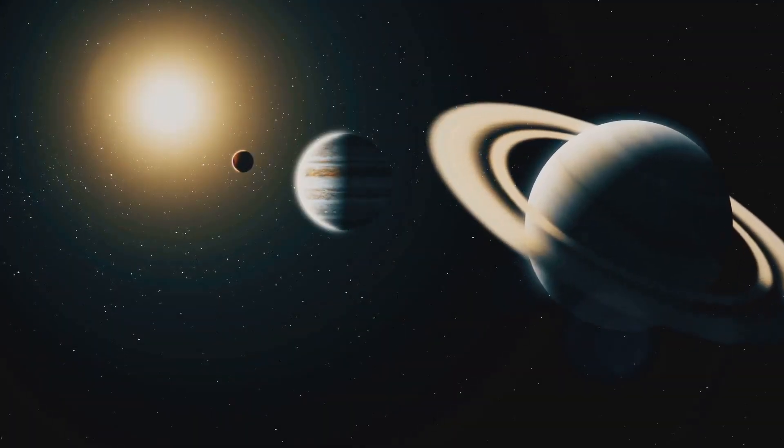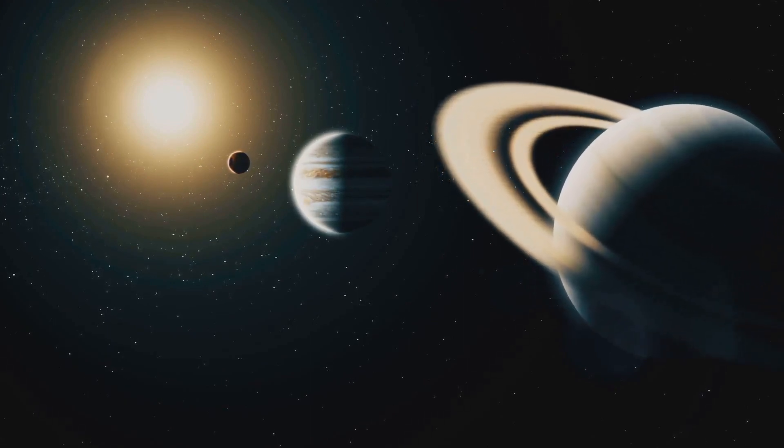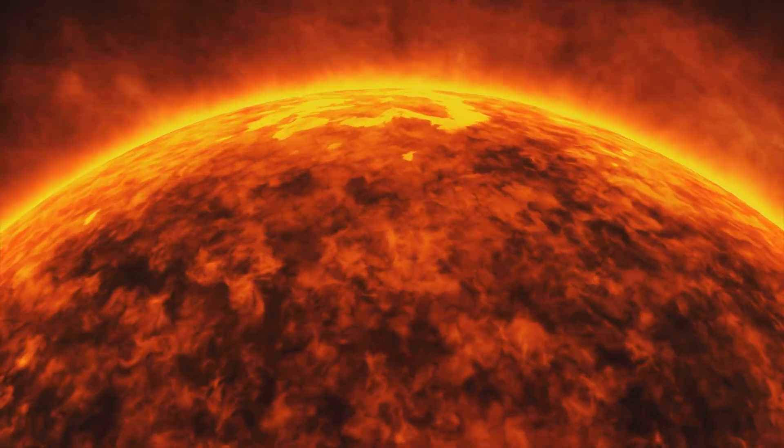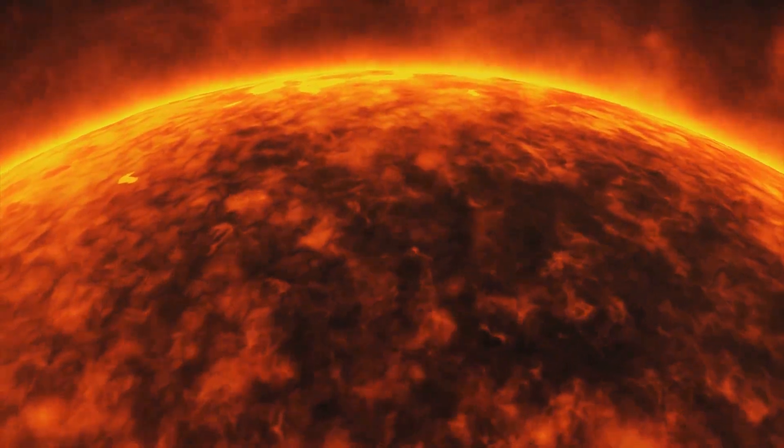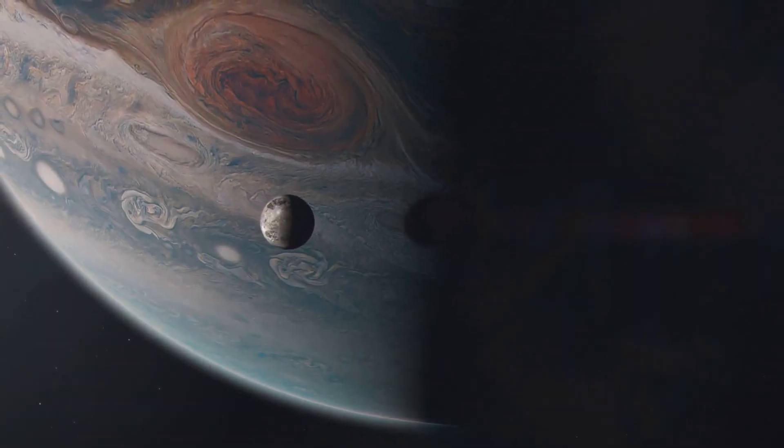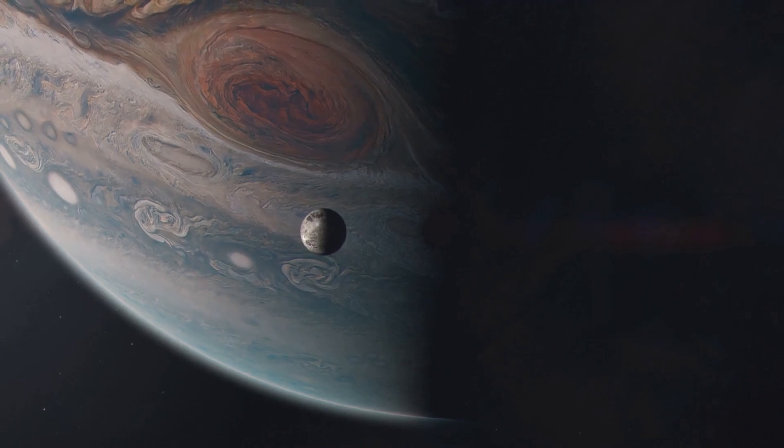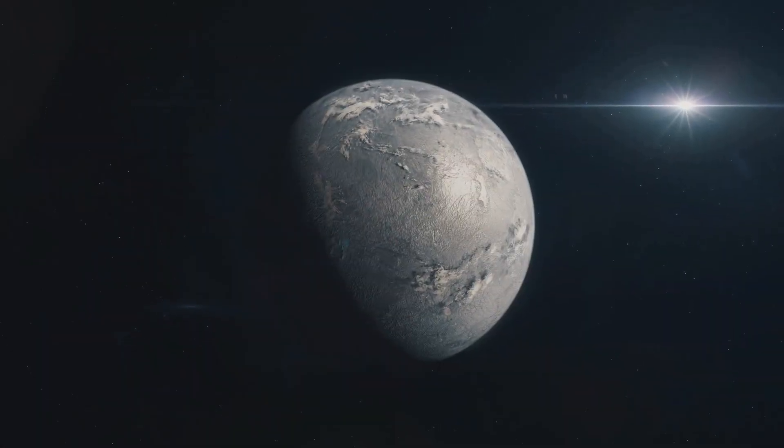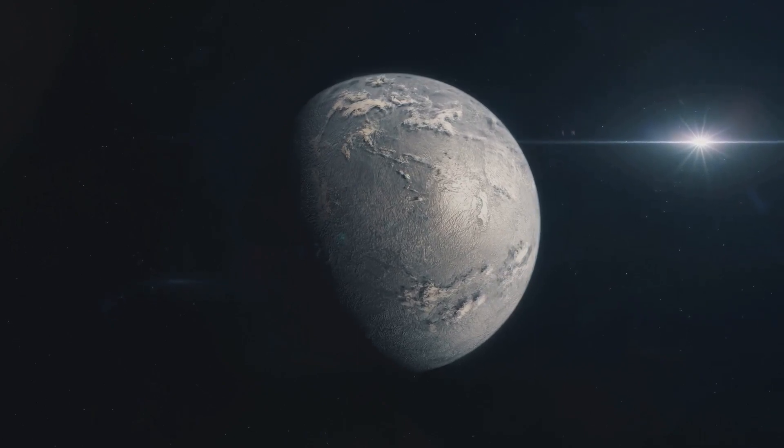But even as the inner solar system faces this fiery demise, a glimmer of hope remains in the outer reaches. As the Sun expands, its habitable zone, the region where temperatures are suitable for liquid water to exist, will shift outwards. The icy moons of Jupiter and Saturn, now bathed in the warmth of the red giant Sun, could become potential havens for life. Imagine vast oceans teeming with alien lifeforms, evolving and adapting to the unique conditions of these once frozen worlds.